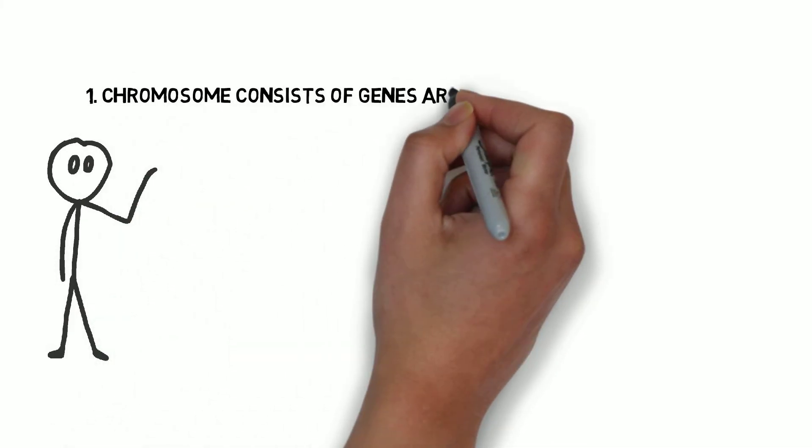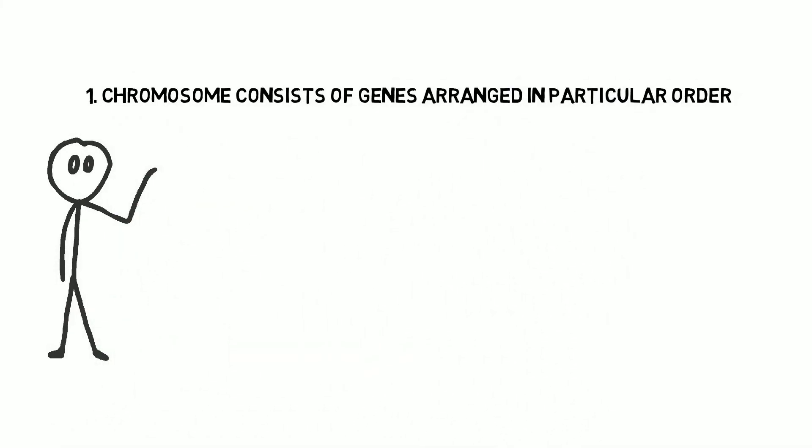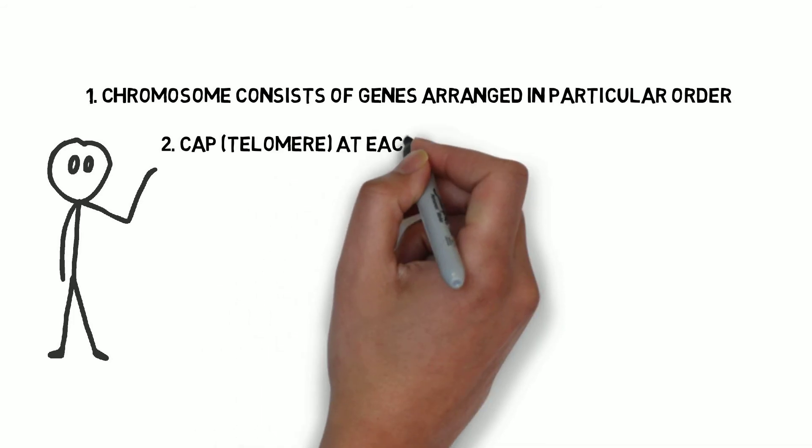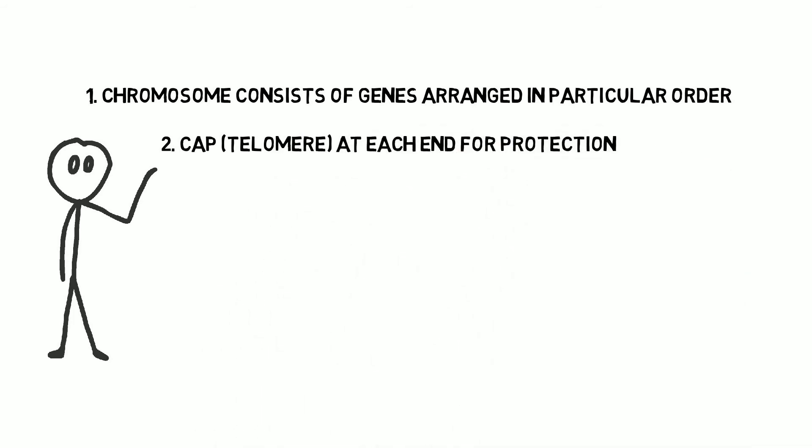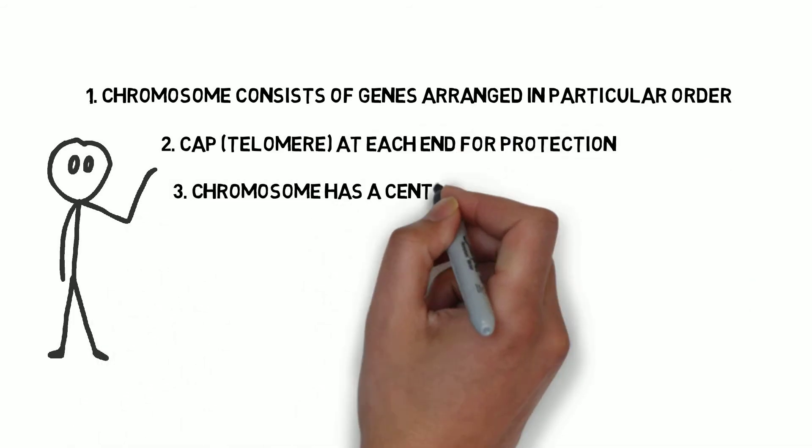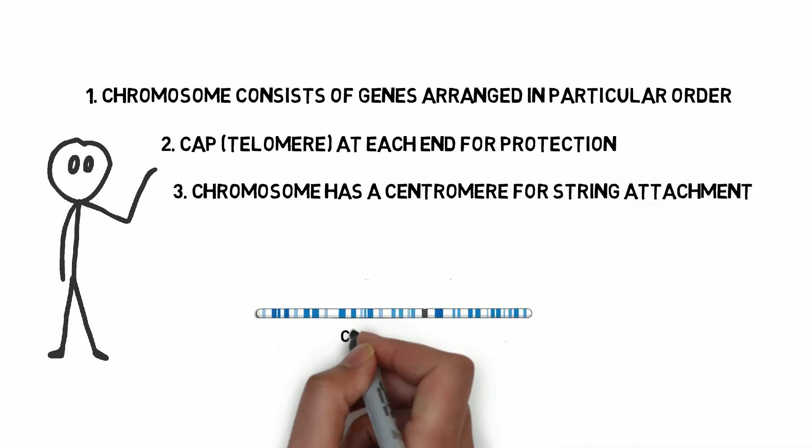So to recap, first, a chromosome consists of genes arranged along it in a particular order. Second, there is a cap called the telomere at each end. And third, a chromosome has a centromere. This specific chromosome is chromosome number two, and it has a particularly interesting history. And I'm now going to tell you what is really intriguing about it.